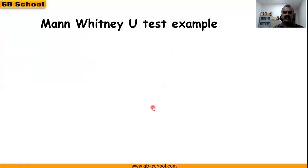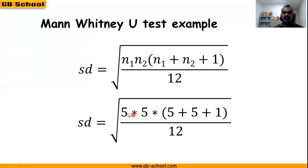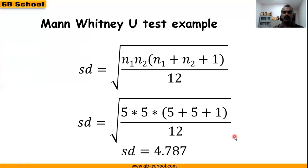Next we find the standard deviation using the formula: square root of n1 times n2 times (n1 plus n2 plus 1) divided by 12. So that is square root of 5 times 5 times (5 plus 5 plus 1) divided by 12, giving an SD of 4.787.